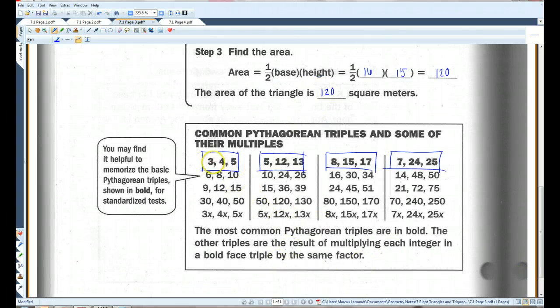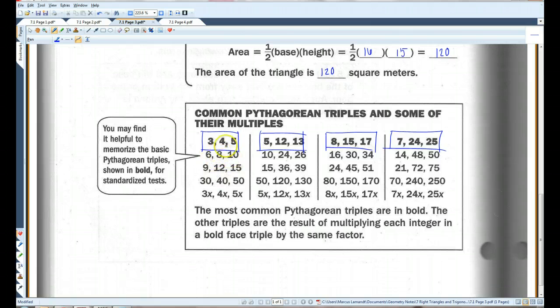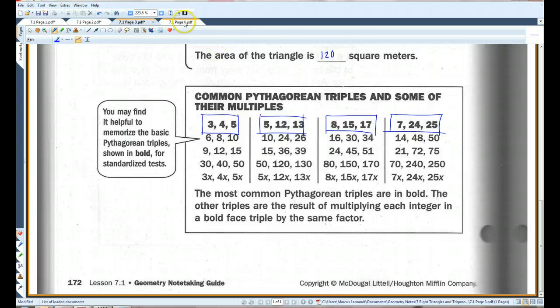This one in particular, 3, 4, 5, this is the most common one. And as hopefully you can tell, the column is just multiples of the one that's in bold. So, 3, 4, 5, if you multiply all three of those by 2, you get 6, 8, 10. If you multiply by 3, you get 9, 12, 15. You multiply by 10, 30, 40, 50. You can multiply these by any number. And the same goes for the other triples. So, if you memorize just these four, you can figure out the rest of them just from these four. All right. Let's go on to page 4.